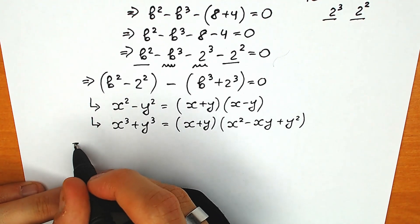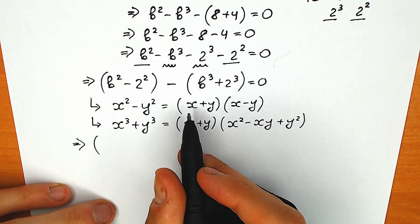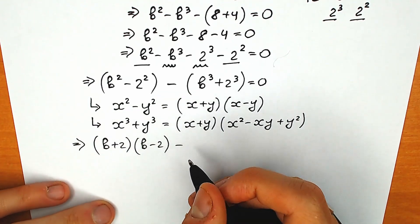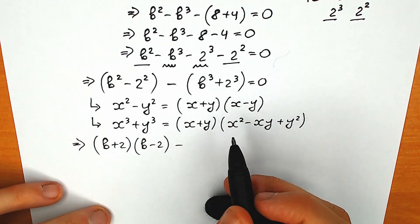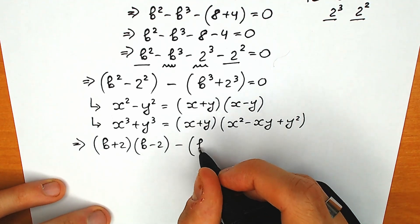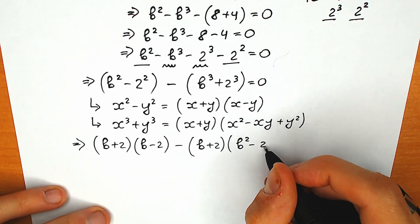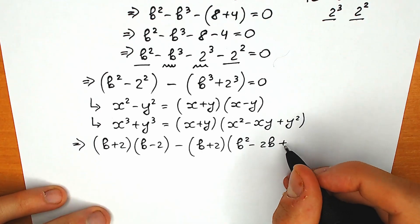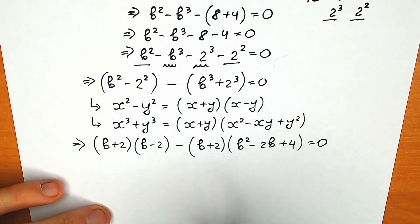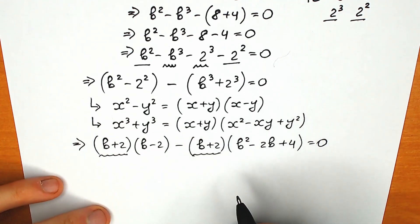I'm going to apply difference of squares first, writing b² - 2² as (b+2)(b-2). Then for the sum of cubes, b³ + 2³ = (b+2)(b² - 2b + 4). So right now we have (b+2)(b-2) minus (b+2)(b² - 2b + 4) equal to 0. Looking closely, we can see that (b+2) appears in both terms, so we can factor it out as a common factor.